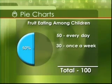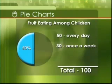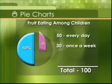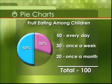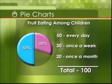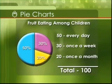30 children eat fruit once a week. That represents 30% of the total and can be shown by filling in 30% of the pie chart. 20 children eat fruit once a month. That represents 20% of the total and can be shown by filling in 20% of the pie chart.